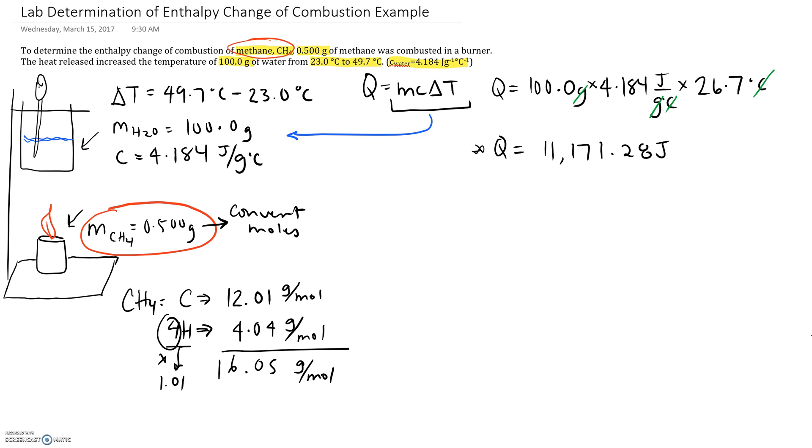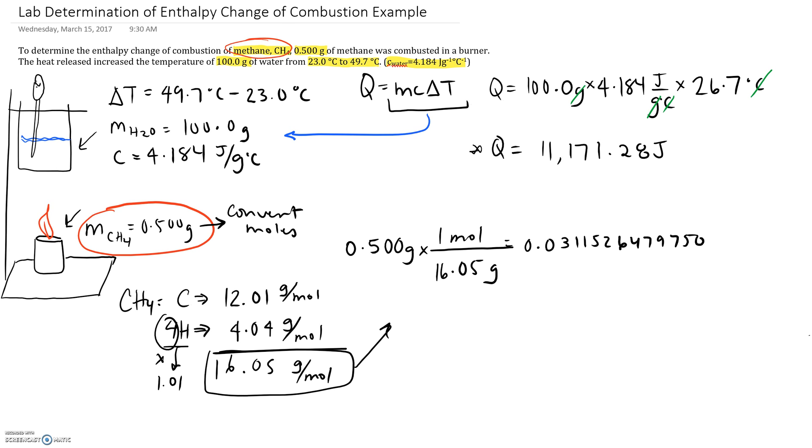So I'm going to go through and calculate that. I'm going to get a unit of grams per mole, and I get 16.05 grams per mole. Now I take that value and I take my given, and I'm going to convert this given into moles. I have - always start out with my given - 0.500 grams. Then I set up a fraction that contains this information. I want to get rid of grams, so I put the grams on the bottom, 16.05 grams, and that's equivalent to one mole. In my calculator, I'm taking 0.500 and dividing that by 16.05, and I get a number of moles of methane that were burned equal to 0.0311526479750. That's moles.